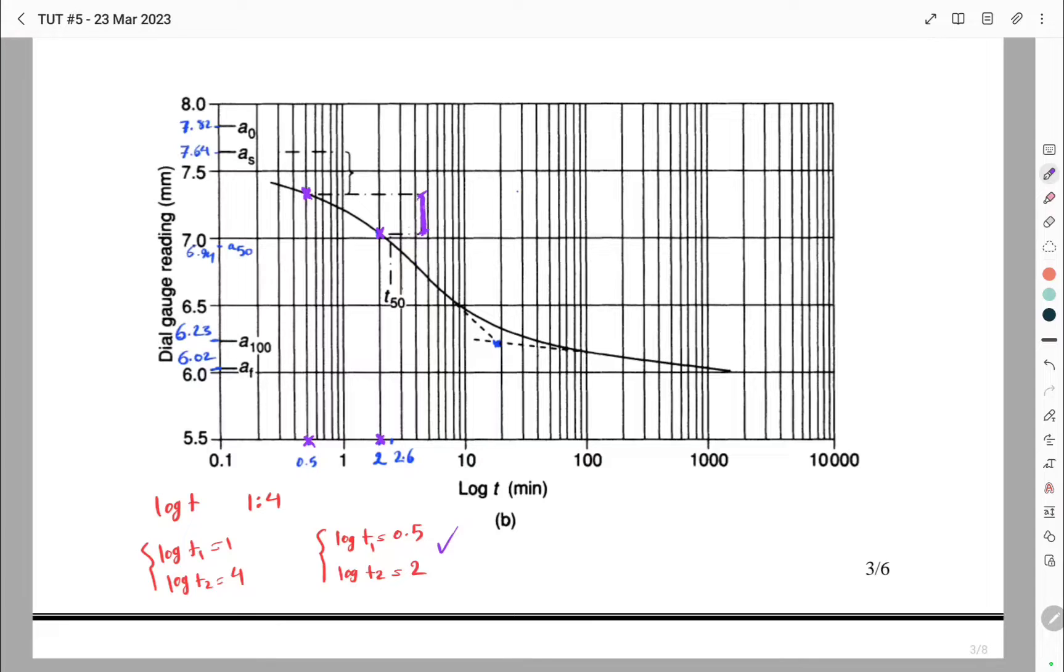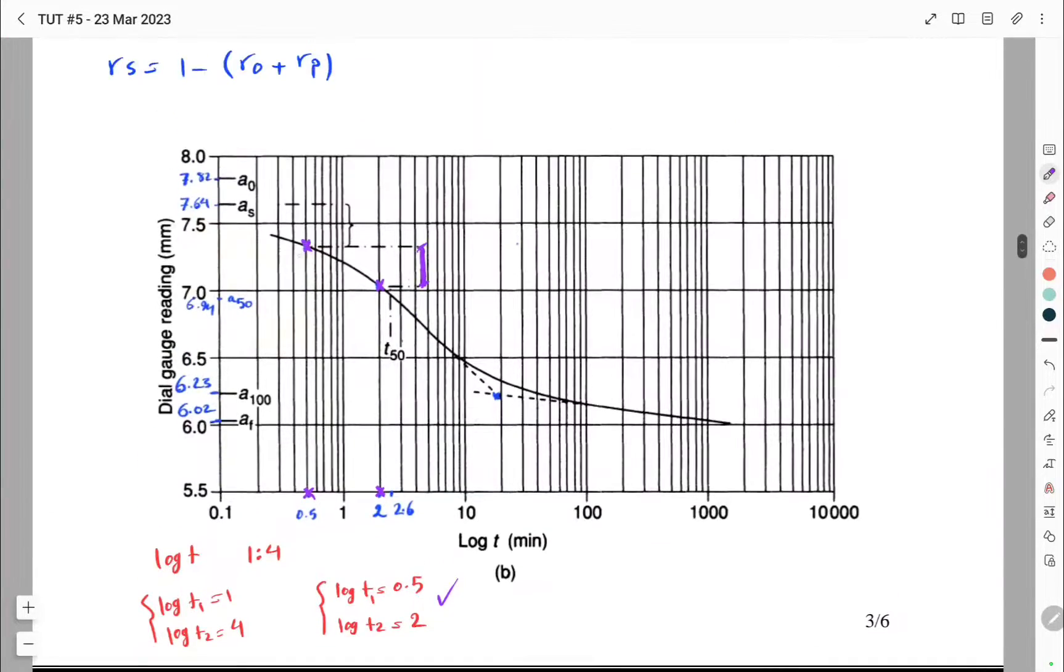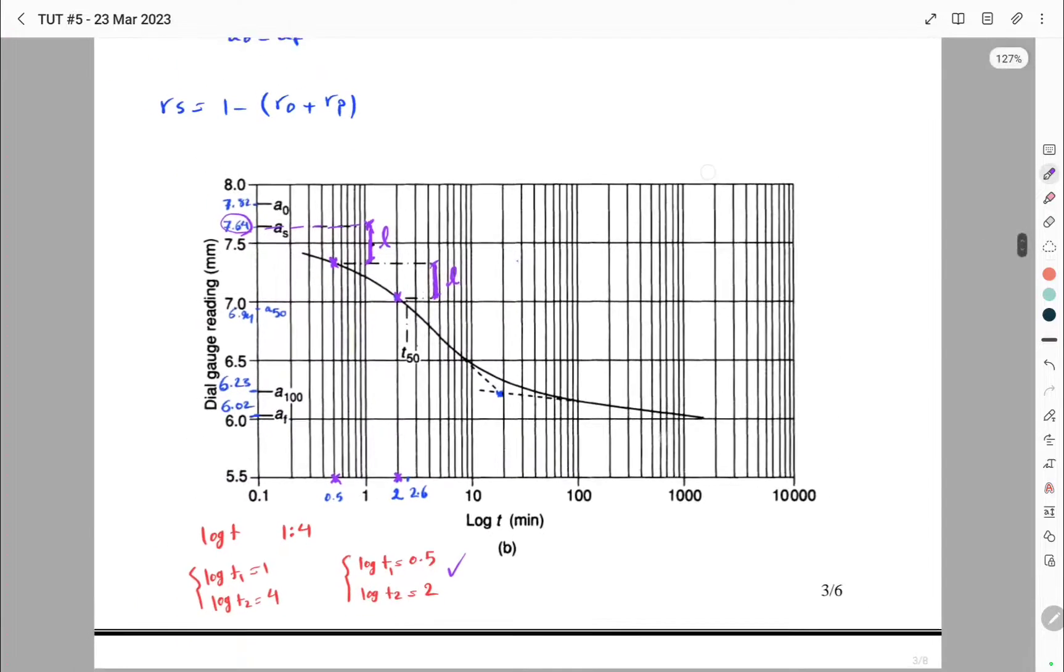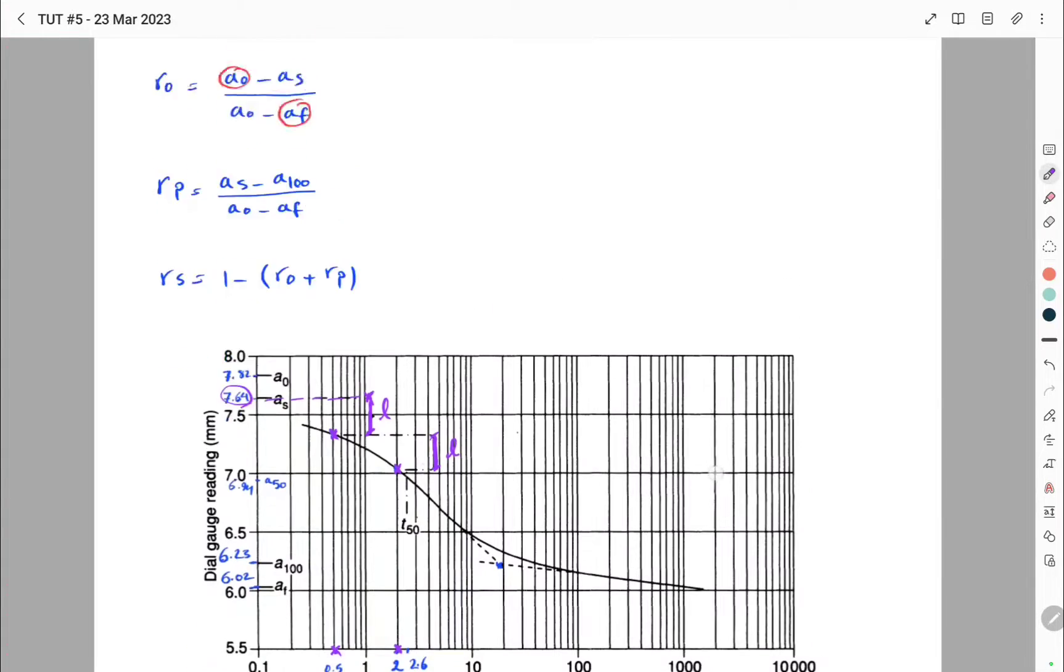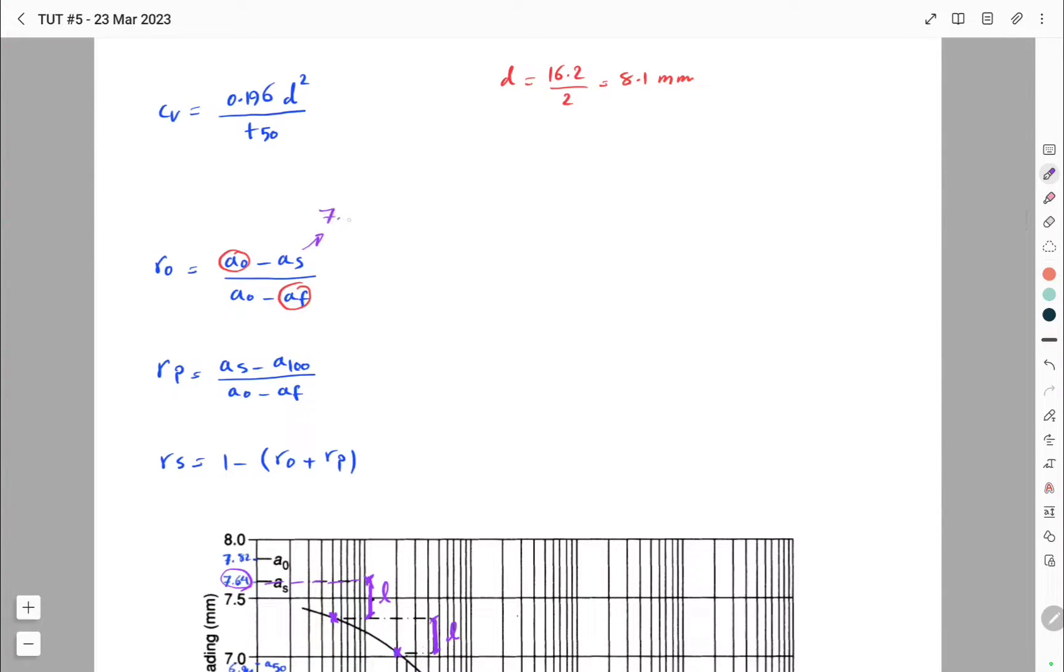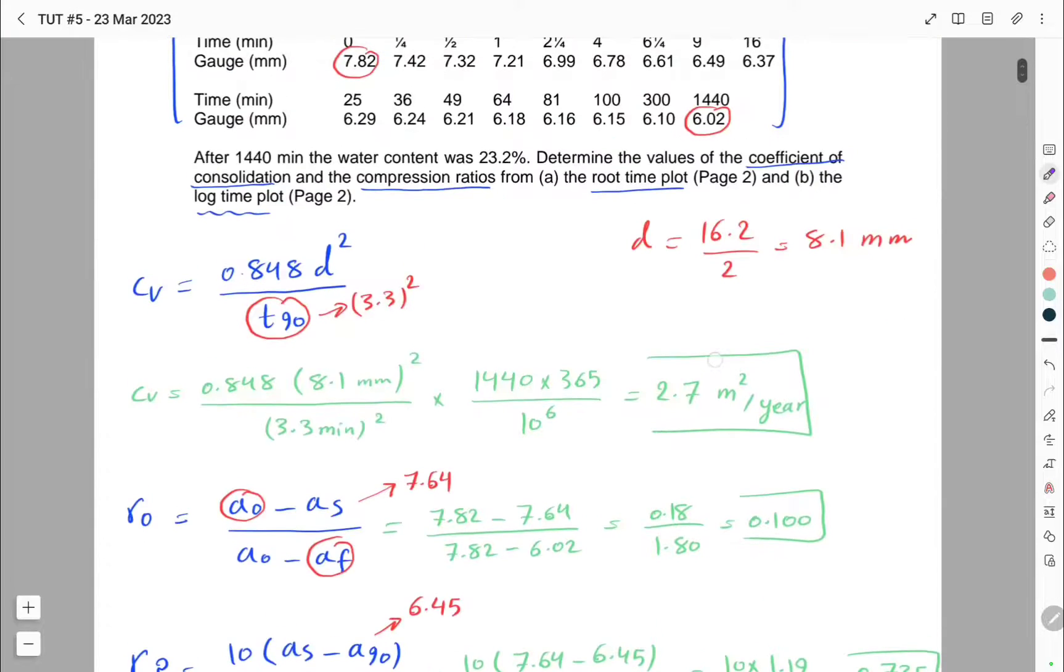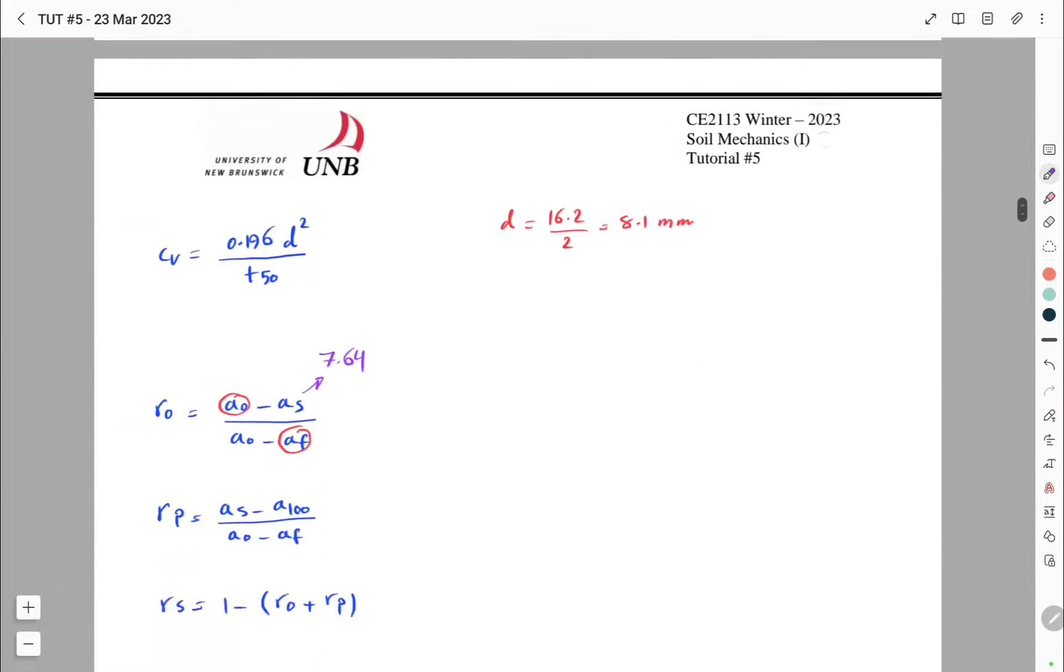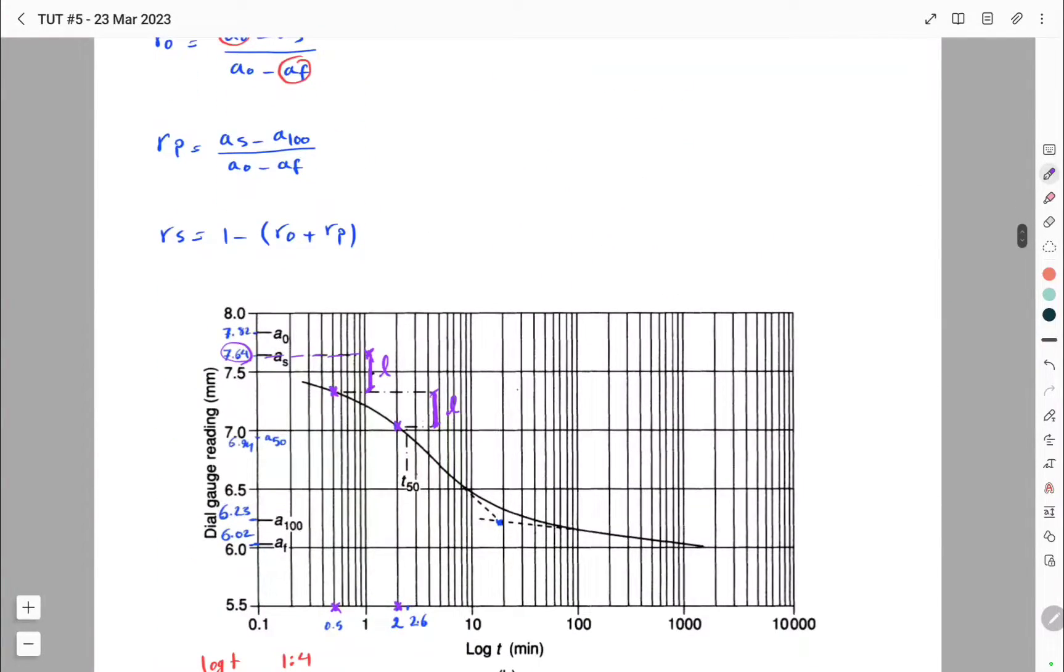Then we have to go up from the upper point. So say this is L, this has to be L. We have to go up from the upper point and then determine the corresponding value of this point on the vertical axis, which gives us a value of AS equal to 7.64. So our AS is 7.64, which is the same as the value that we determined in the previous method.